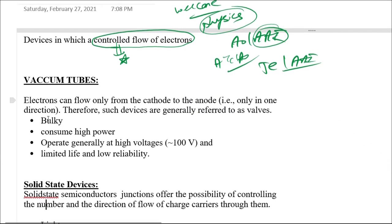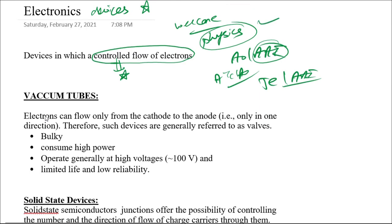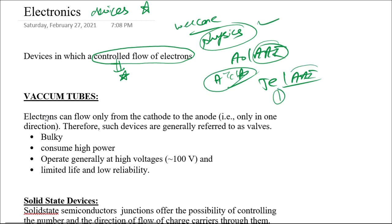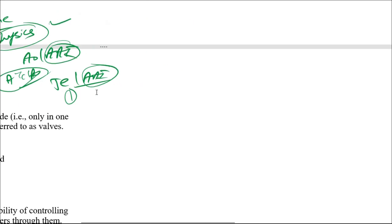Hello friends, welcome to today's video. Today we will be discussing an important topic: electronic devices, which is part of the physics syllabus common for both ATC as well as the Airport Operations Junior Executive of Airport Authority of India. Electronic devices are those in which there is a controlled flow of electrons. This is the key term — electrons flow in metals and other devices, but the control is absent there.